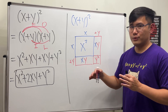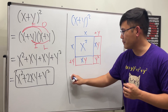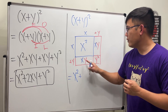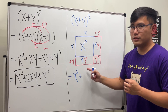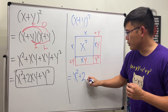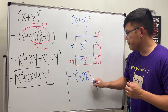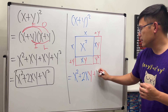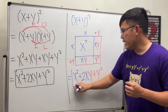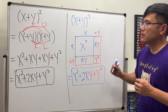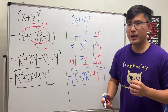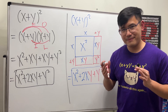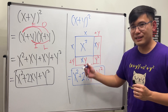Now we combine everything. We have x squared, then two of the rectangles — so that's 2xy — and lastly we add y squared. This gives us x squared plus 2xy plus y squared. And that is the geometry way to handle (x + y) squared!